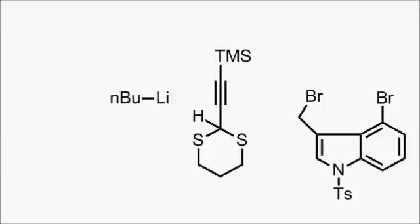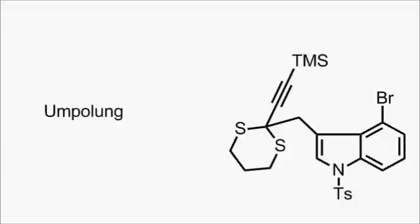N-butyl lithium can deprotonate to give a carbanion, which is stabilized by the two sulfurs, and that's a good, hard nucleophile to displace the bromide ion. This is an example of umpolung, where the natural polarity of the reaction is reversed. The dithiane can be considered as a masked carbonyl group.